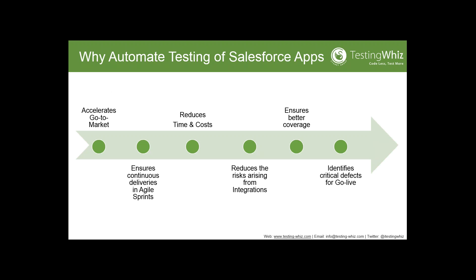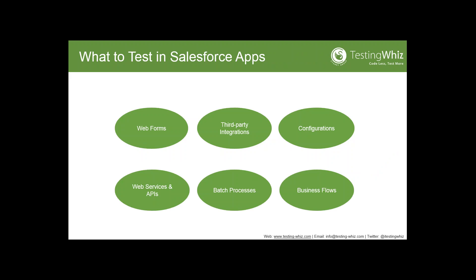So what is the solution? The solution is TestingWiz and why you should automate your Salesforce app using it. TestingWiz allows you to accelerate your go-to-market by working with Salesforce seamlessly. It ensures your deliveries in agile sprints are correct, accurate and continuous. It helps you reduce time and costs, reduce the risk arising from your integrations, and ensures better coverage. It also identifies critical defects before GoLive and ensures you release applications with minimum defects.